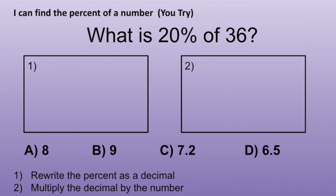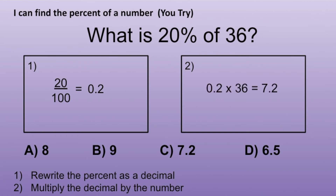Now I will review the solution. Step 1 is to rewrite the percent as a decimal. The starting percentage is 20%. So we remove the percent sign and then divide by 100. So 20% as a decimal is 0.2. Step 2 is to multiply the decimal by the number. 0.2 times 36 is equal to 7.2. The correct answer is C, 7.2.